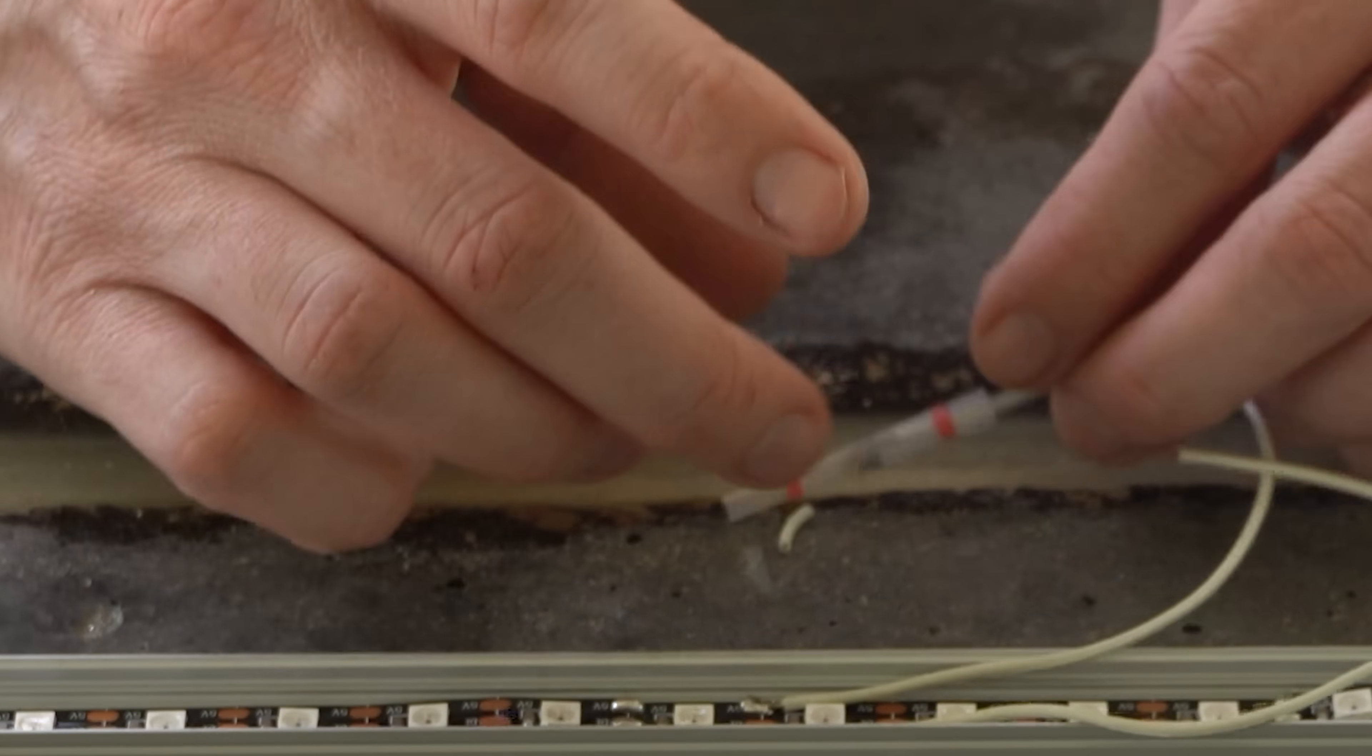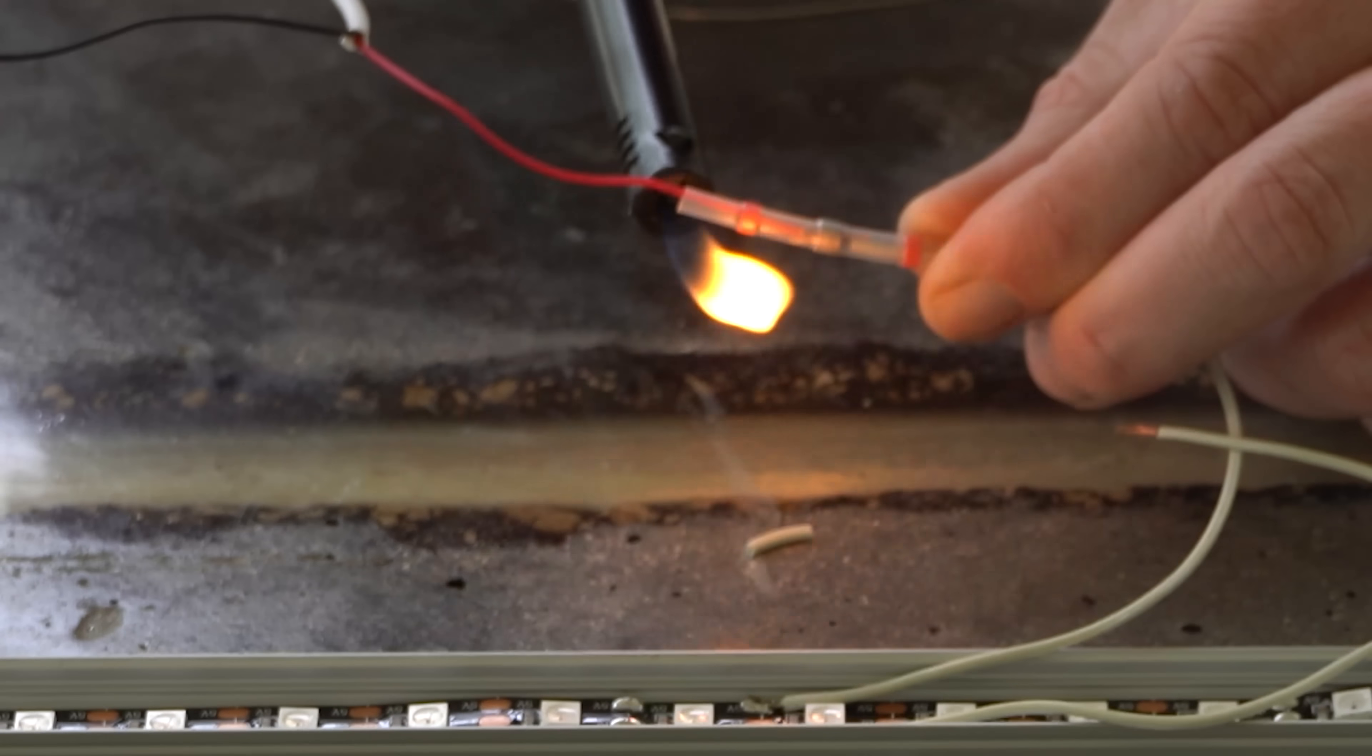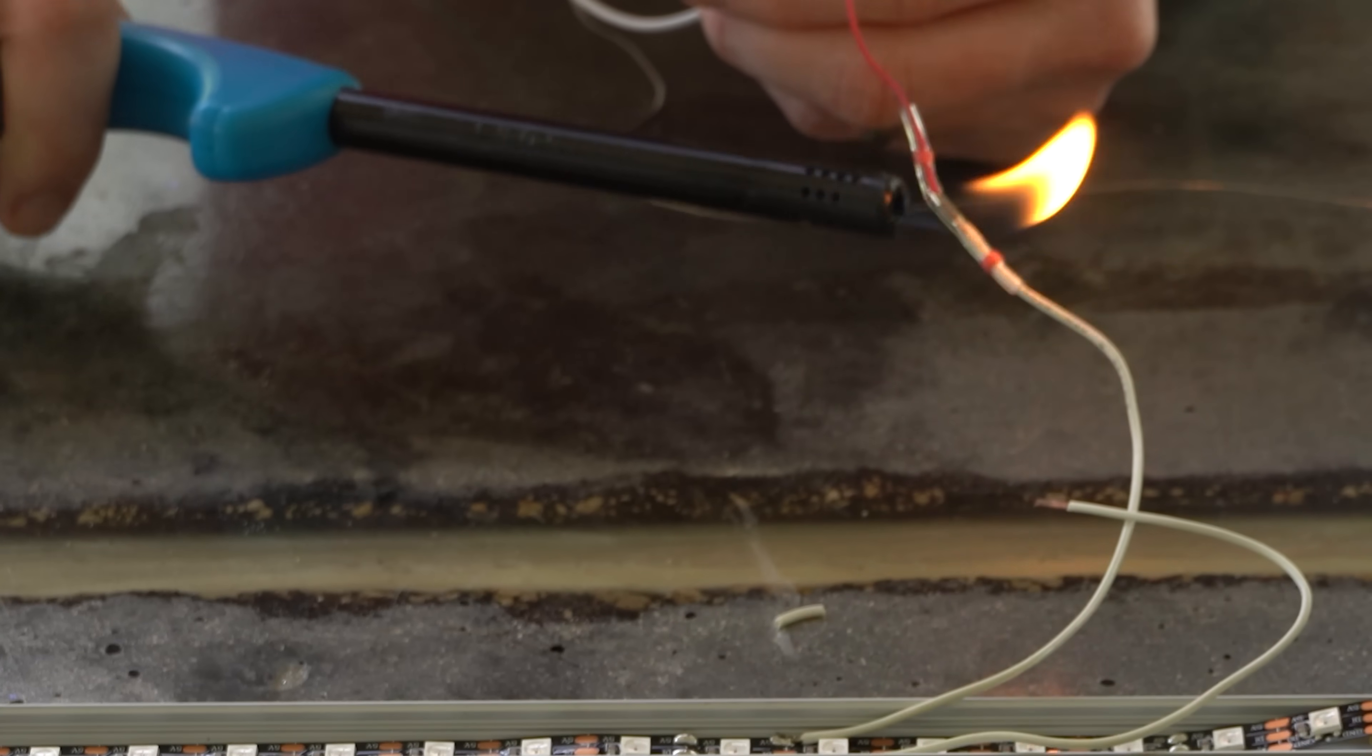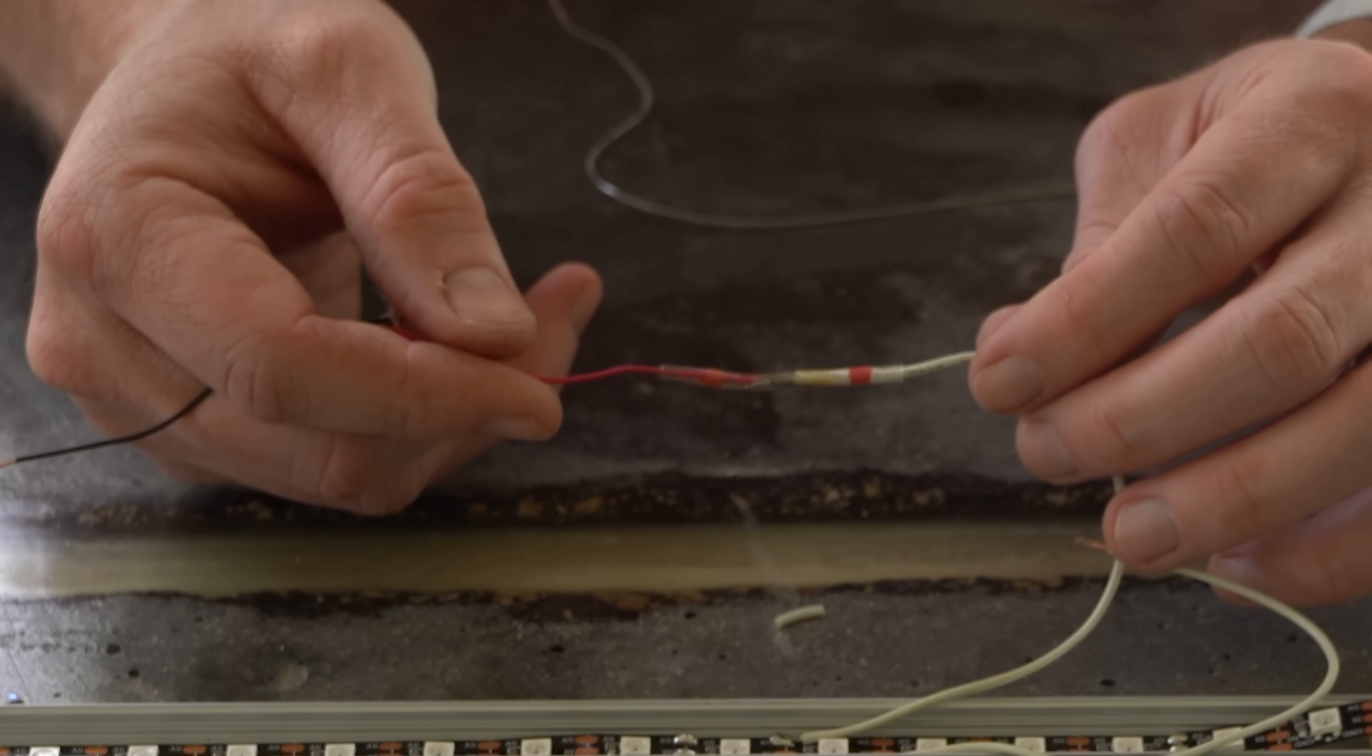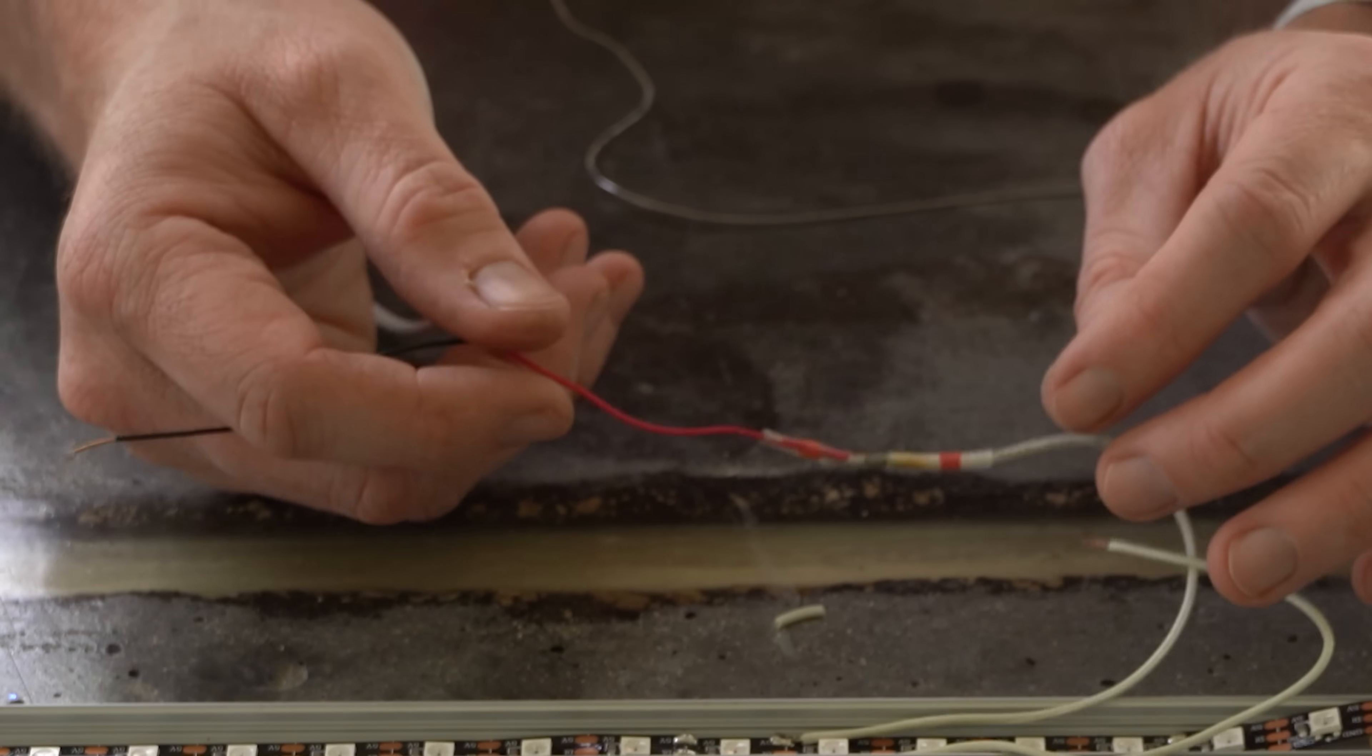To use the solder seal butt connectors, just strip about a centimeter of each wire that you're connecting and then insert them into the opposite sides of the connector. With the strip section of both wires crossing in the middle of the connector, apply heat to the colored bands on either side of the strip. Those colored bands melt to create both a watertight seal and hold the wires in place. Then you just apply heat to the middle until you see the solder in the center section start to flow into the two wires and then you're all done.